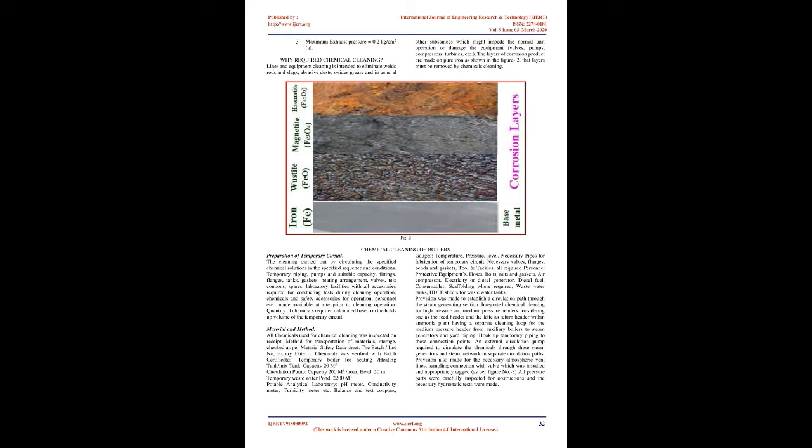The purified synthesis gas is compressed and then routed to the ammonia synthesis loop, where it is converted into ammonia. In order to limit the accumulation of argon and methane in the loop, a purge stream is taken. The liquid ammonia product is depressurized, during which the dissolved gases (let down gas) and inert gas are flashed off.